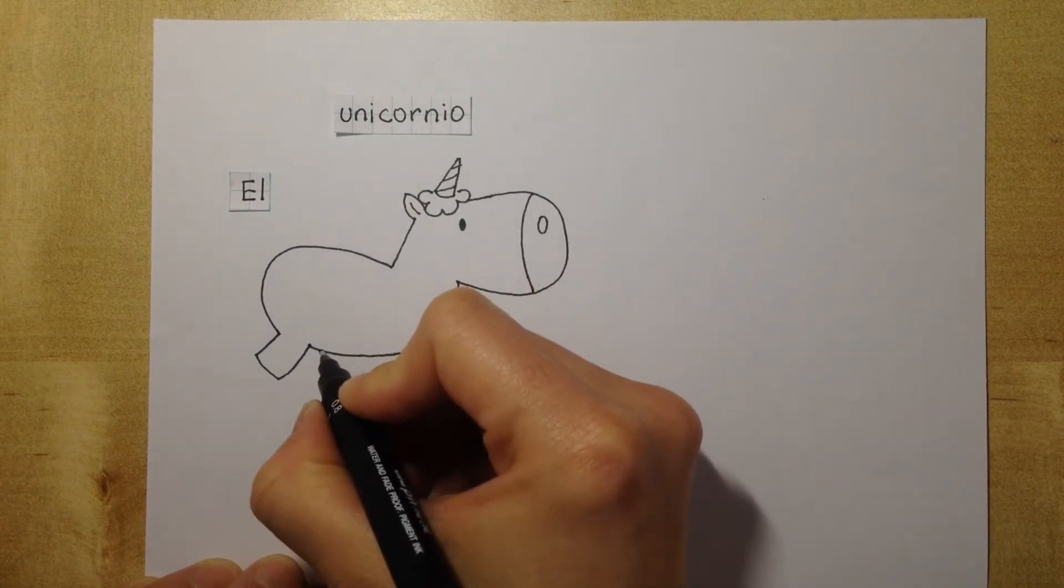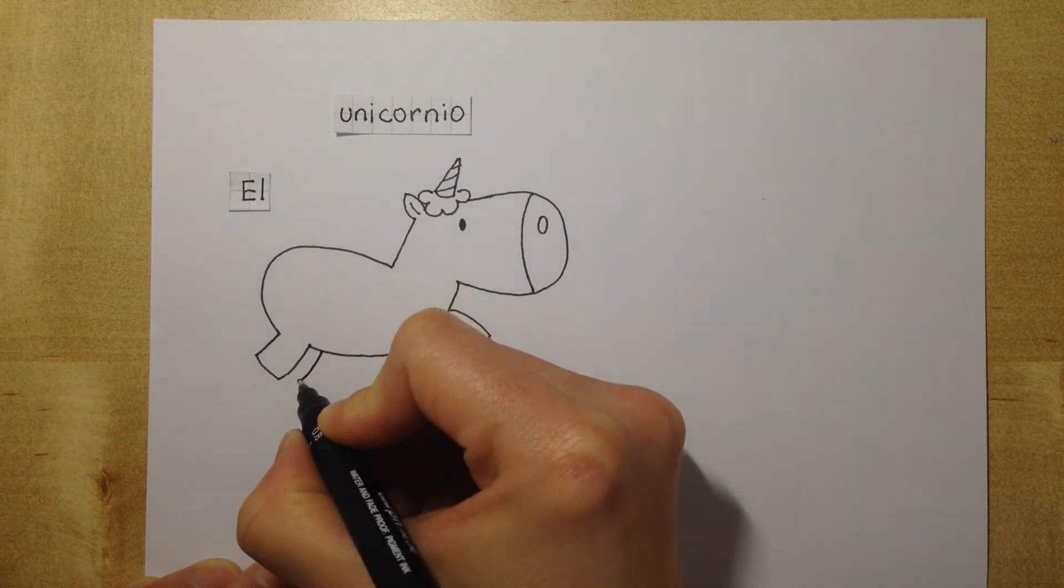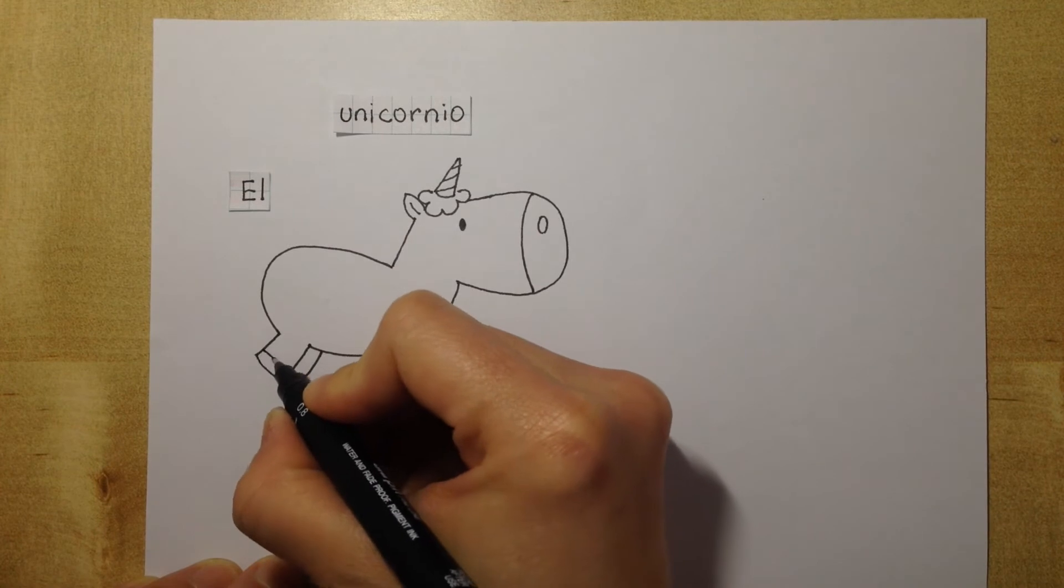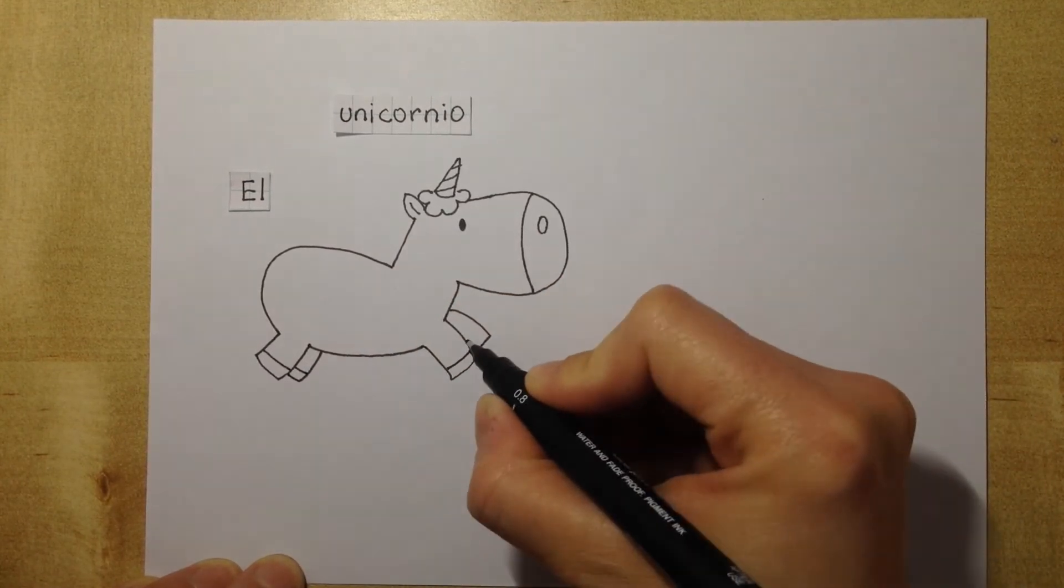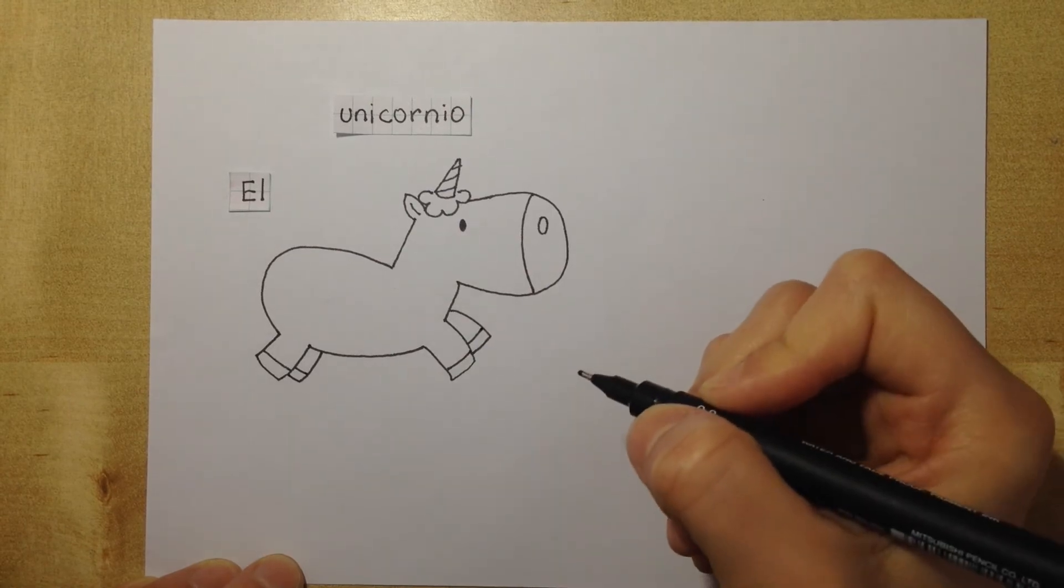Now the other legs that are on the other side and lines on the bottom of his legs to make the feet.